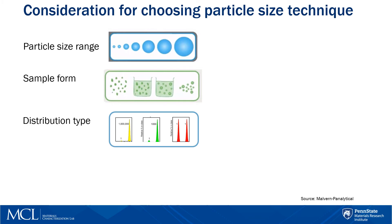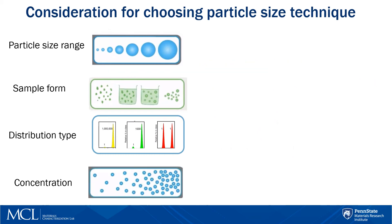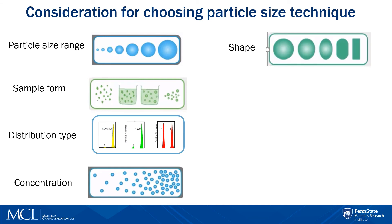Another important criterion is the size distribution type. Each technique has its preferred way to present the distribution: intensity-weighted for dynamic light scattering, volume-weighted for laser diffraction, and number-weighted for automated imaging. Here you see a size distribution for a sample that has the same number of 5 nm and 50 nm particles. Note that the intensity and volume distributions are biased towards larger particles and agglomerates. Shape is also a consideration — some equivalent sphere models may not work well for particles with irregular shapes.